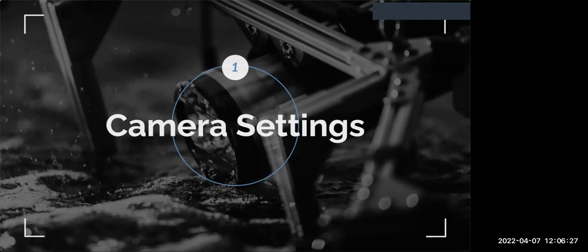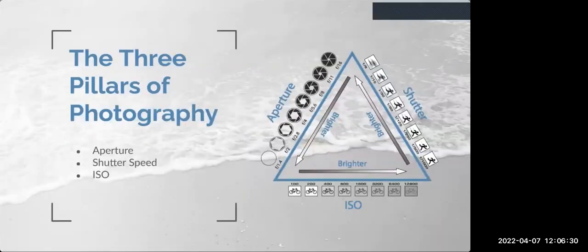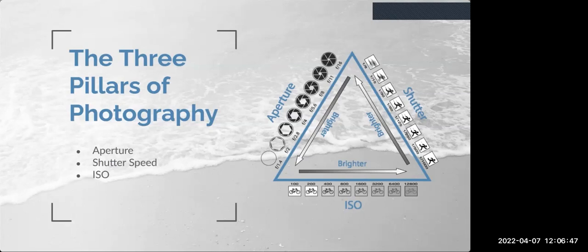So why are camera settings important to understand? In photography, the exposure triangle explains the relationship between shutter speed, ISO, and aperture. Whether you're shooting underwater or in air, these three factors are at the center of every exposure and resulting image. The three settings are linked — changing one affects the others.